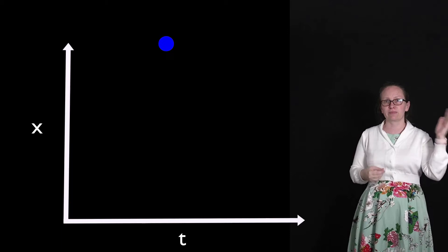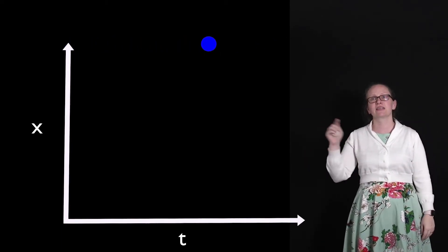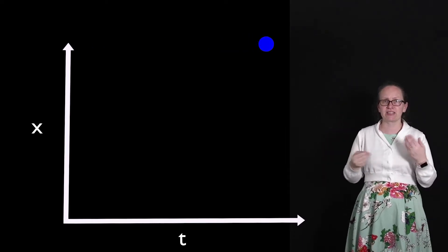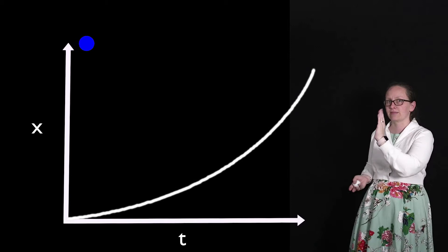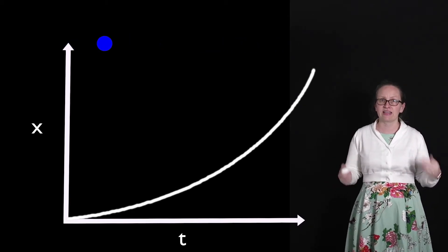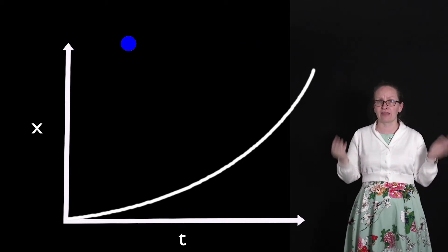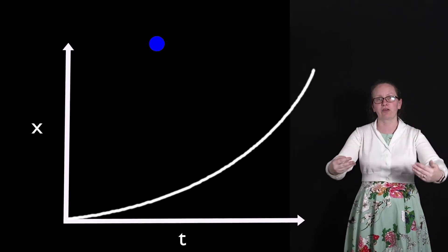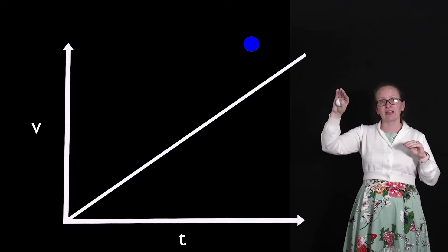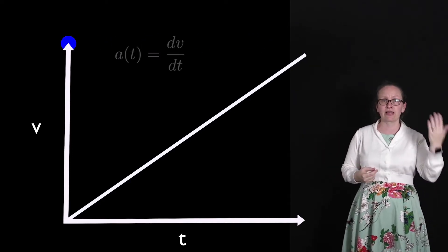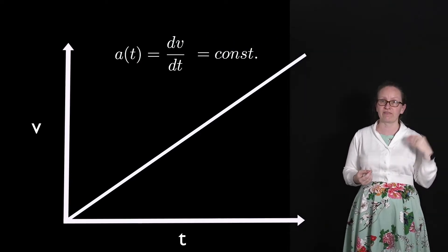Let's now consider a dot which is accelerating at a constant rate. It's traveling with a constant acceleration along the x-axis. For the displacement versus time graph, at later times the displacement is changing more rapidly, so we have a steeper gradient at later times and a shallower gradient at earlier times — it turns out this graph is actually a parabola. The velocity versus time graph in this case is a straight line, as the velocity is increasing at a constant rate, so the acceleration — which is the gradient — is constant.